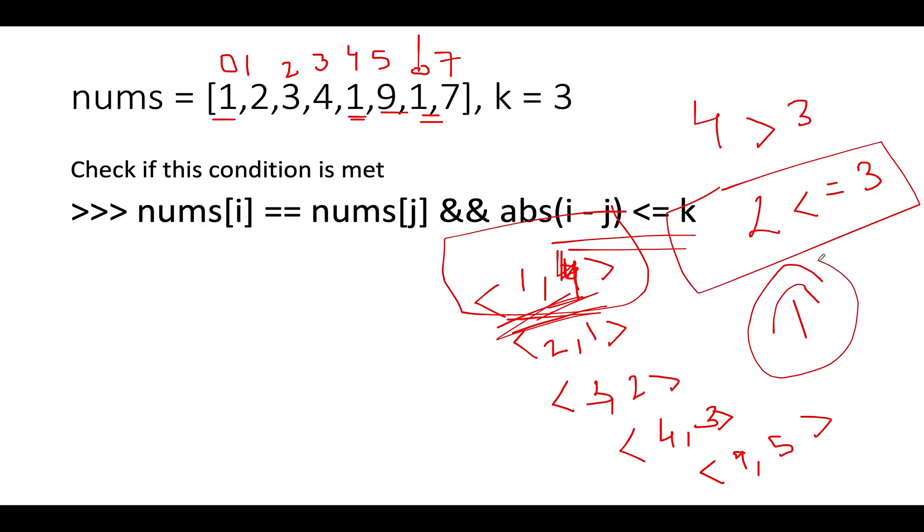In case we do not find any position where both conditions are met, we simply return false as a default case. The time complexity of this approach is order of n. The space complexity of this approach is again order of n. To conclude it further, let's quickly walk through the coding section.